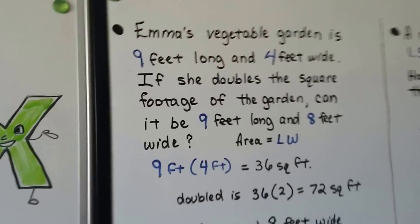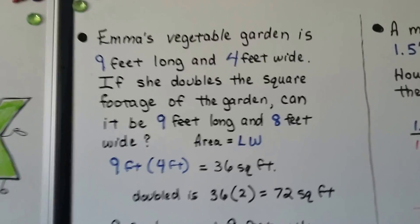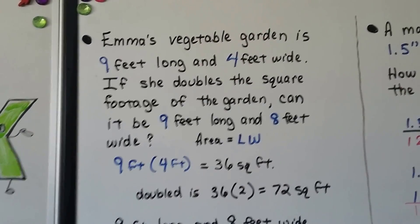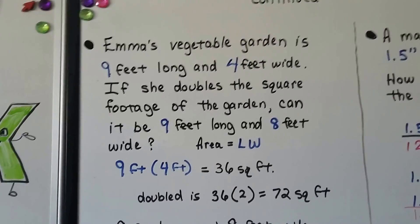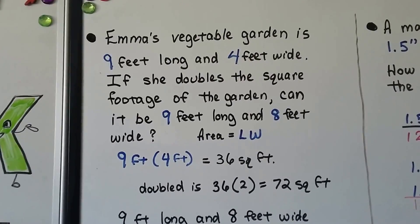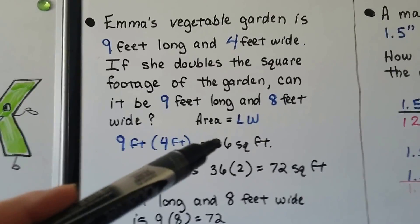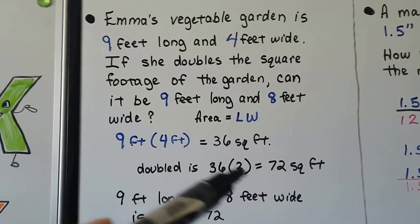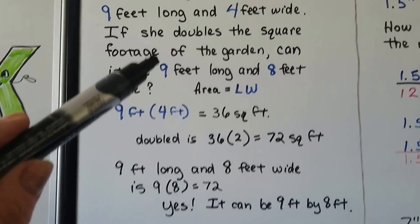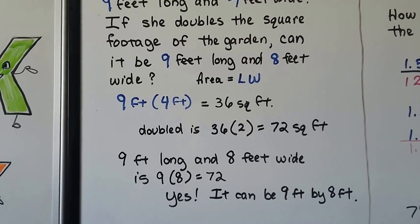Now, this one is a little bit different, but I wanted to show this to you because people make a big mistake when they double square footage. Emma's vegetable garden is nine feet long and four feet wide. If she doubles the square footage of the garden, can it be nine feet long and eight feet wide? So, the mistake people make is they double both numbers. They think, oh, I'm doubling, and they double both numbers. But, you don't do that. Nine feet long and four feet wide would be thirty-six square feet. To double the square footage, we would be doubling this thirty-six. Thirty-six times two is seventy-two square feet. And, nine times eight is seventy-two. So, yes, nine feet long and eight feet wide would be the measurement for a doubled square footage of that garden.